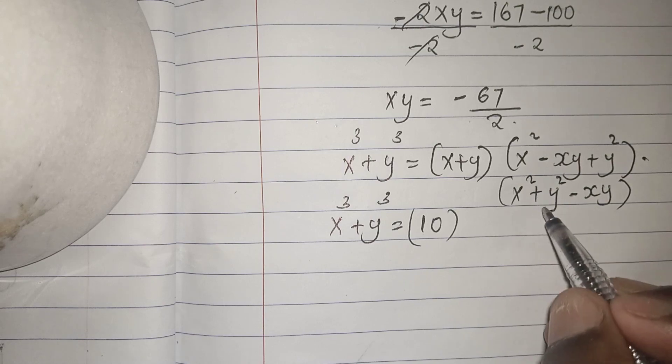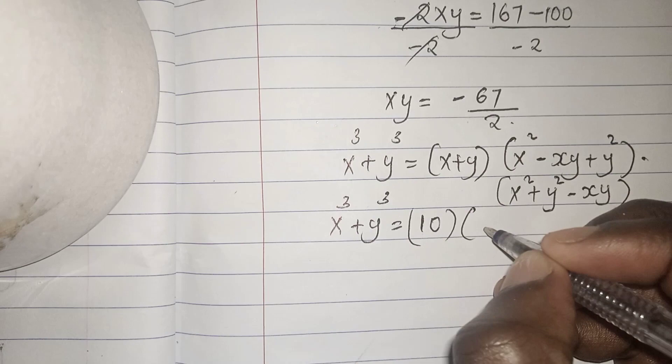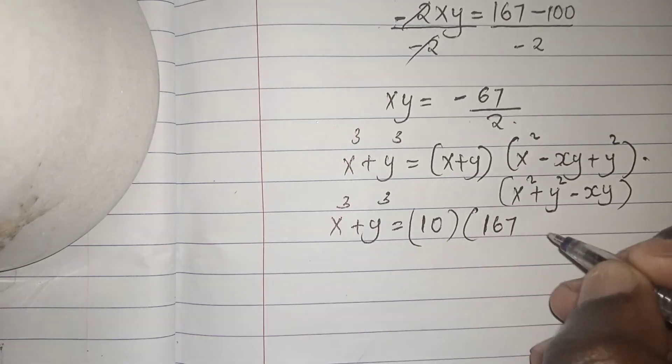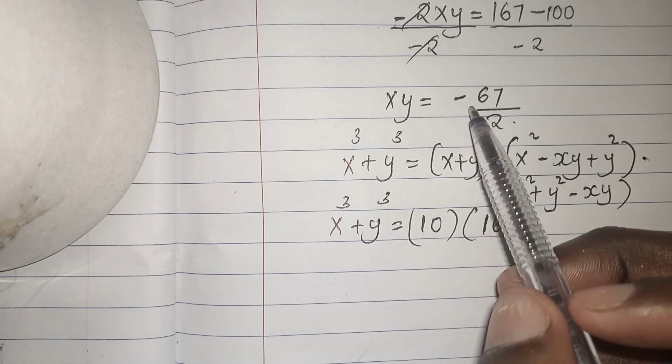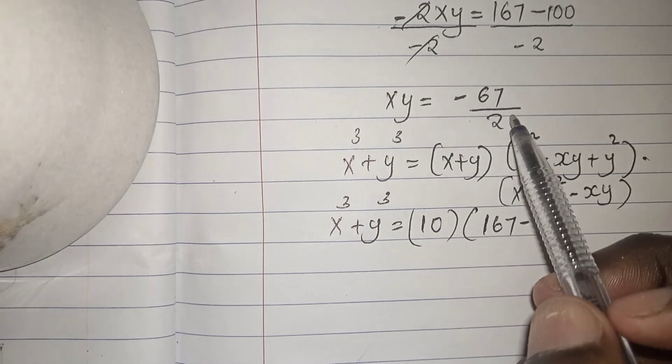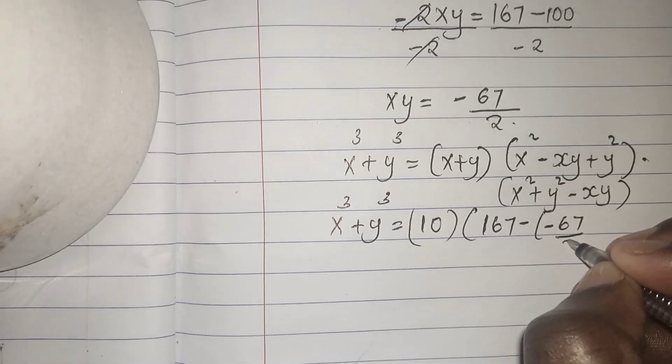So x squared plus y squared from our equation 2 is 167 minus xy. xy, remember, is negative 67 over 2. So into bracket negative 67 over 2.